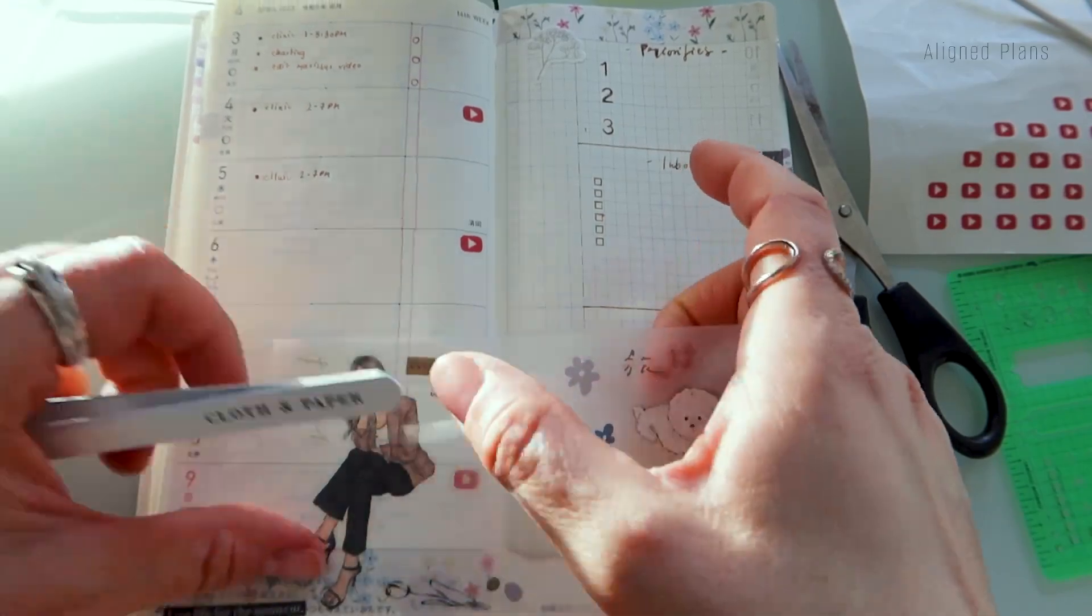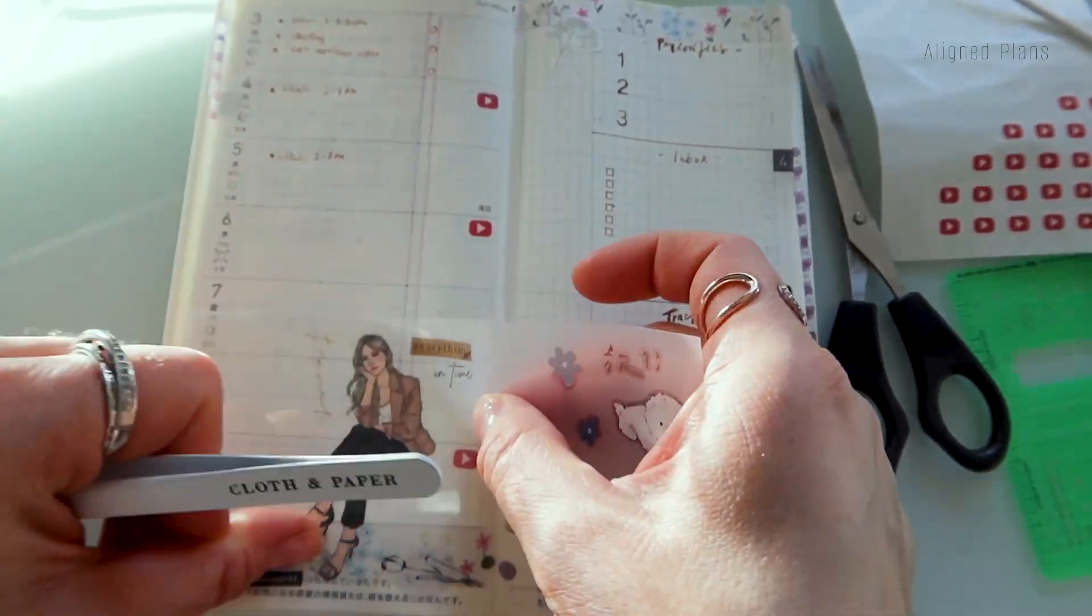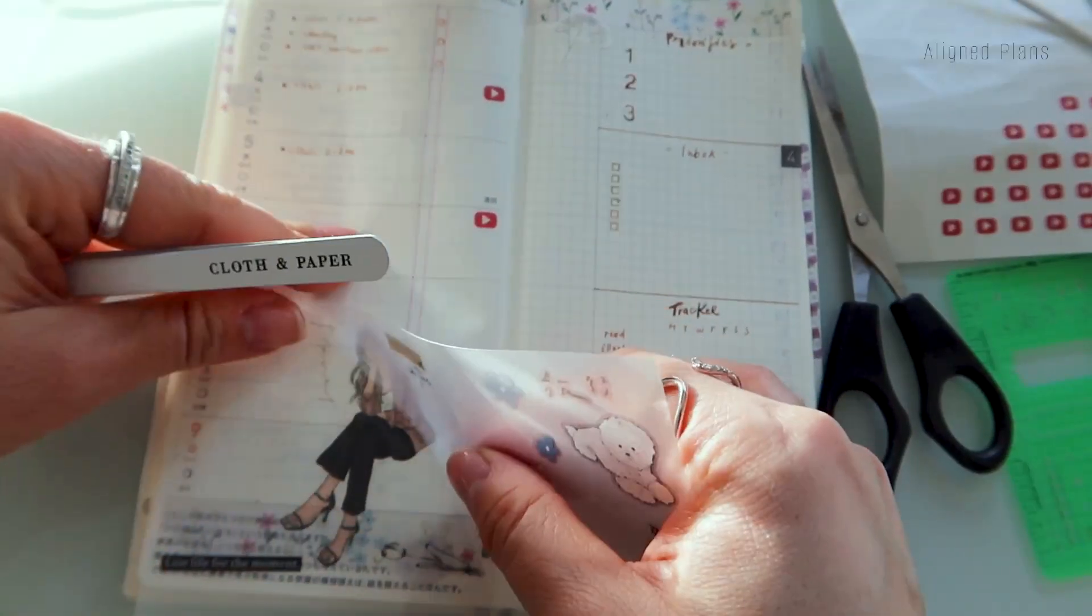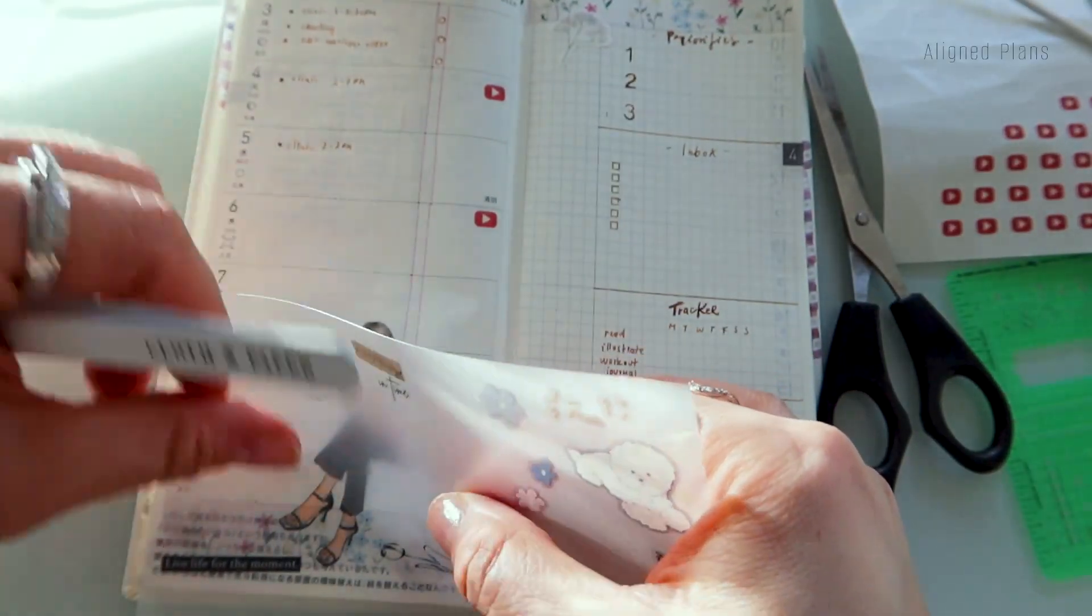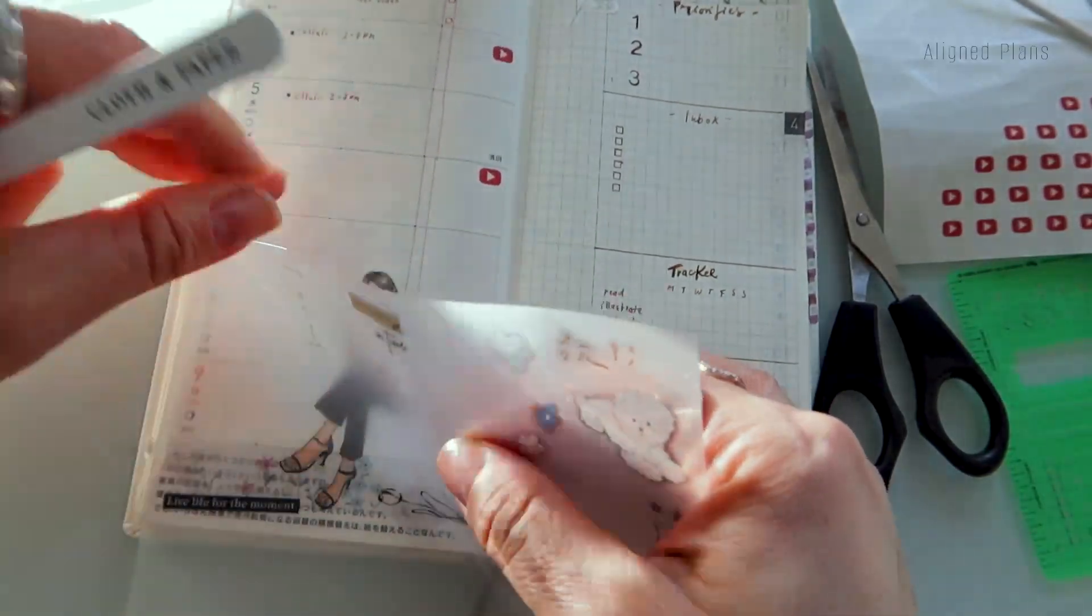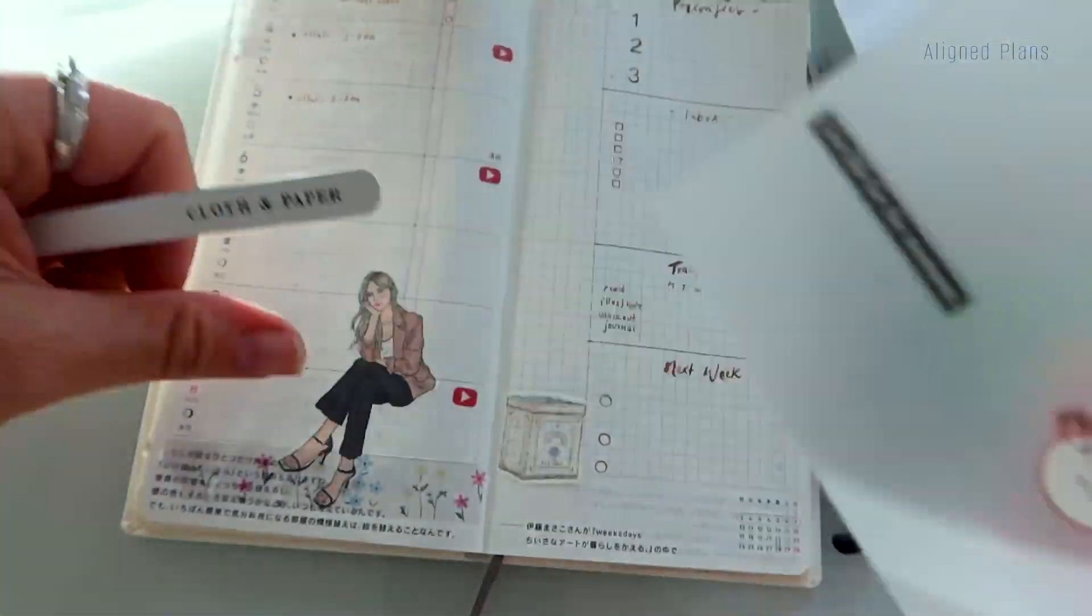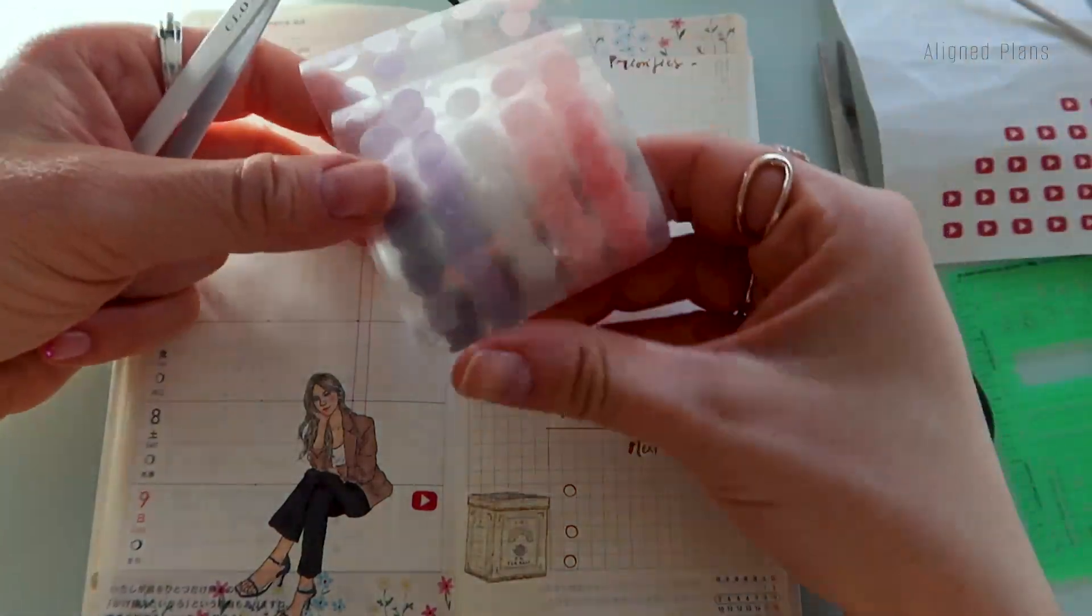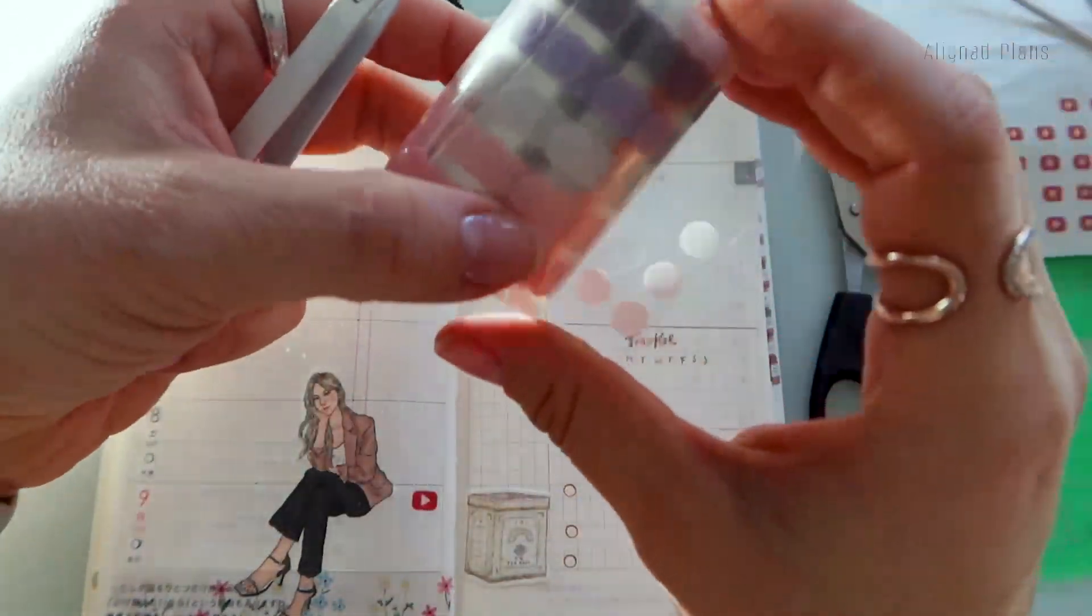And then here, this is the press-on sticker that I also bought from Paper Plus Cloth. I actually have the full roll of the same girl. It's super cute. Sometimes I just prefer the press-on stickers. If you're looking to not bulk up your planner, these press-on stickers are absolutely the way to go.